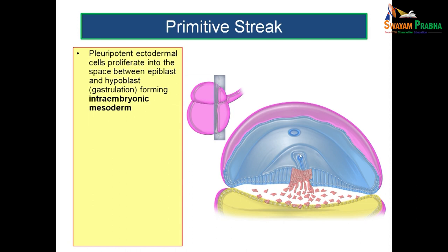In a coronal section taken towards the caudal end of the disc, you can see a part of the primitive streak, and many pluripotent cells arising from the primitive streak occupying the space between the epiblast and hypoblast. The pluripotent cells from the ectoderm proliferate and occupy the space between the epiblast and hypoblast, forming the intraembryonic mesoderm. The process by which the bilaminar germ disc is converted into the trilaminar germ disc is known as gastrulation.